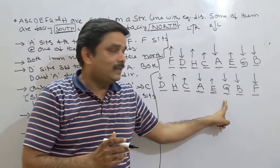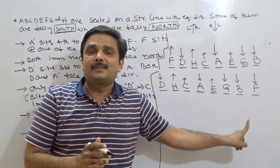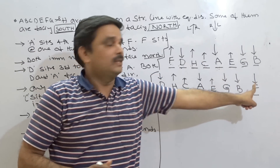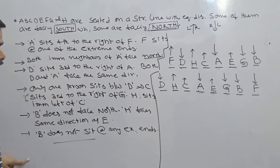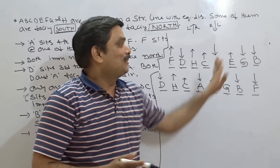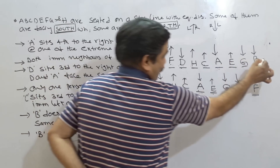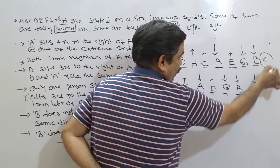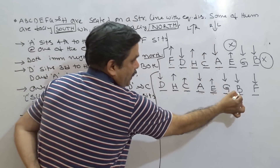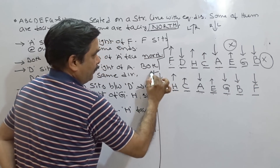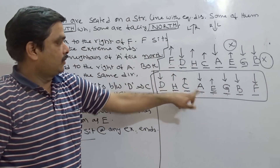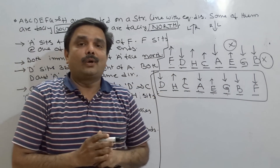Till this extent I am not able to eliminate either of the two possibilities. The examiner gives questions like this - particularly in exams conducted over the last four years. Finally, the last clue: B does not sit at any extreme end of the line. Now this is the happy ending for us! One arrangement has B at an extreme end, so that arrangement is wrong and is eliminated. The other arrangement is confirmed as the final arrangement. We got all the places and all the directions.